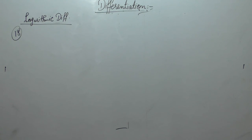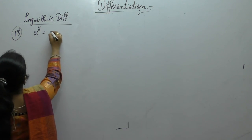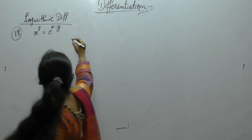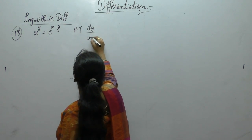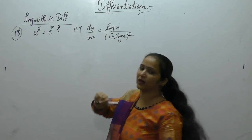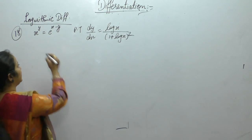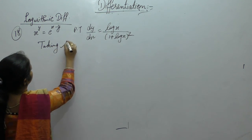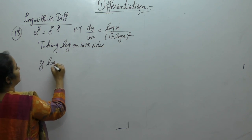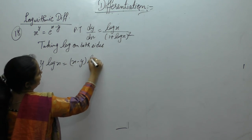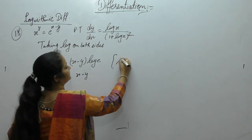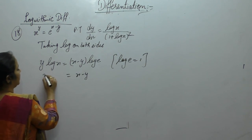Next: If x^y = e^(x−y), prove that dy/dx = log(x) / (1 + log x)². Here variable power variable is there, so taking log on both sides: y·log(x) = (x − y)·log(e). Since log(e) = 1, we get y·log(x) = x − y.